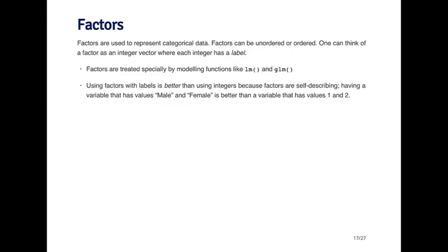Factors are important because they're treated specially by modeling functions like LM and GLM, which we'll talk about later — these are functions for fitting linear models. Factors with labels are generally better than using simple integer vectors because factors are what are called self-describing. Having a variable with values male and female is more descriptive than one that just has ones and twos. In many datasets, a variable coded as one and two makes it hard to tell if it's numeric or categorical, but with a factor variable, the coding for the labels is built into the variable and much easier to understand.